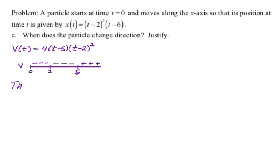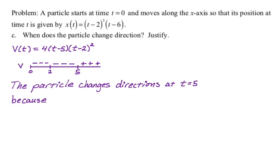So that's going to be our answer. So let's write this up. So the particle changes direction at t equals 5, because v(t) has a sign change there. So we don't need to stipulate that it changes from negative to positive or positive to negative, because we don't really care about that. We just want to know, did it change direction? And so saying there's a sign change says yes, it changed direction.